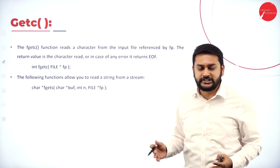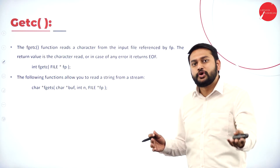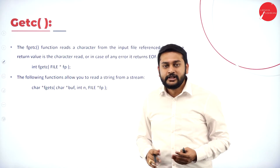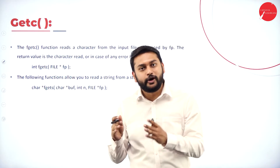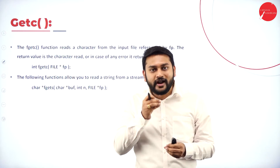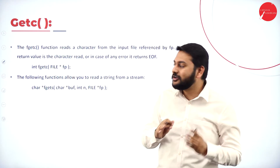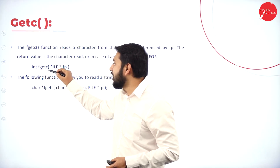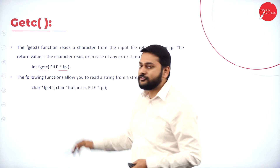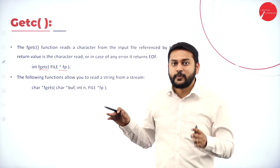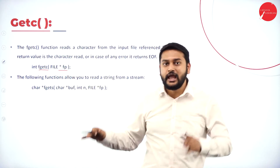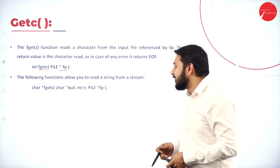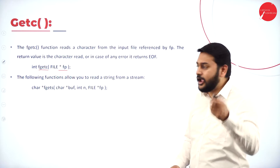The fgetc function is the opposite of fputc. If fputc writes content to the output stream, fgetc reads content from the input stream. With fgetc, you can read one single character at a time. I pass the file pointer to fgetc to read one single character from the file.